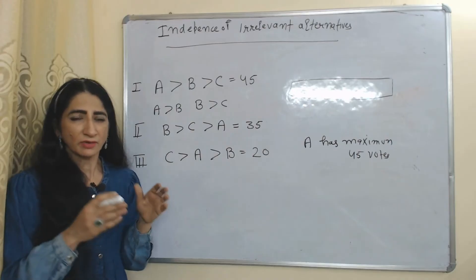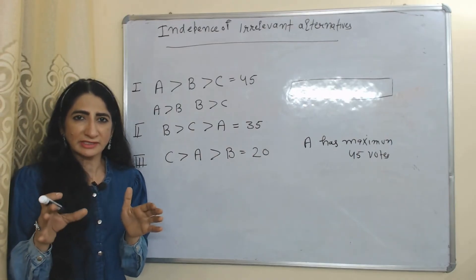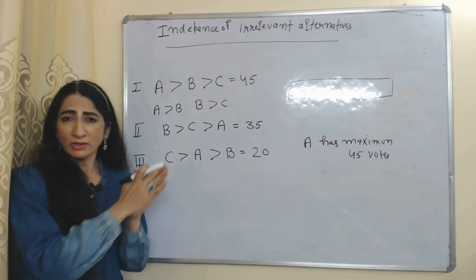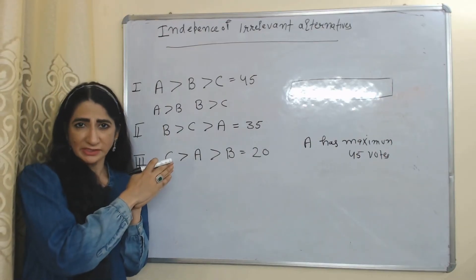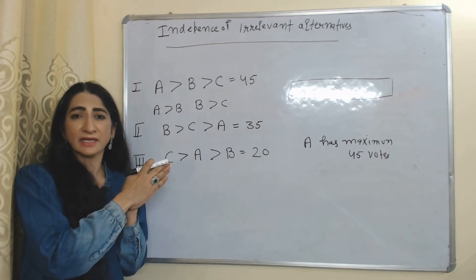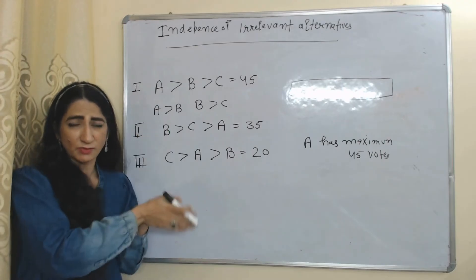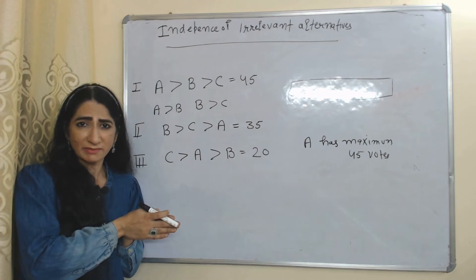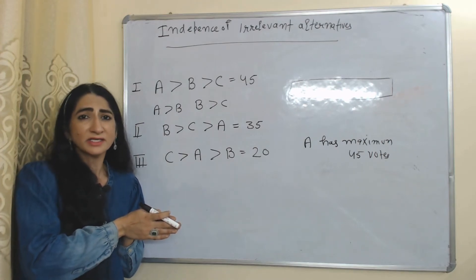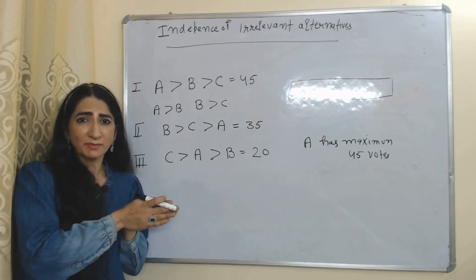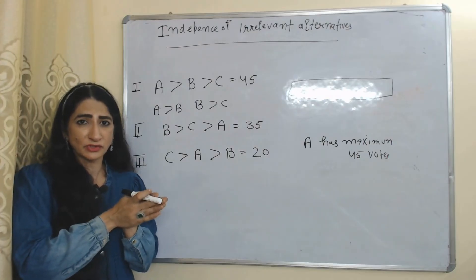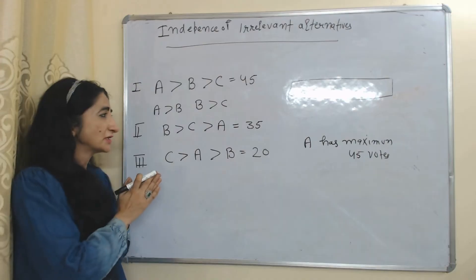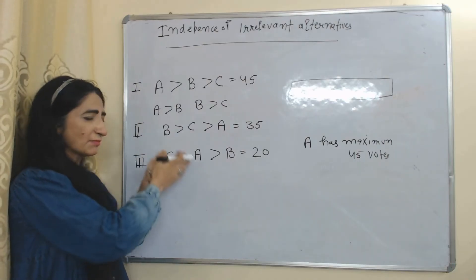According to Arrow, in order to make a valid social decision satisfying all individual preferences, all five conditions must be satisfied. But in reality, it is not possible to satisfy all five conditions — at least one will be violated, making it impossible to produce a valid social decision satisfying all individuals' preferences.